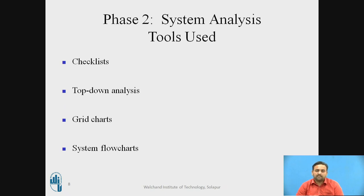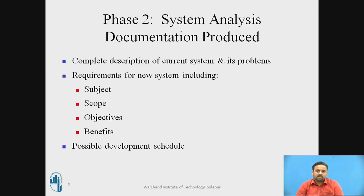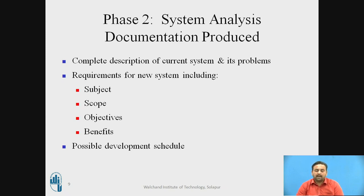The tools used for system analysis are mainly four: the first one is the checklist, then top-down analysis, grid charts, and system flow charts. These are the essential tools used for building up the system. In this phase, we build a short report where we document the current system and its problem statement, and what are its requirements, including scope, objectives, and benefits. You also need to schedule the possible development.